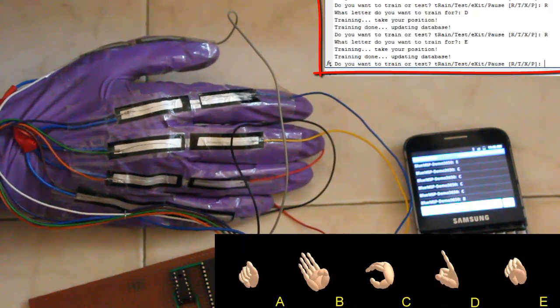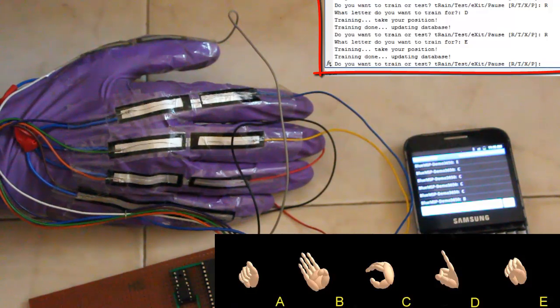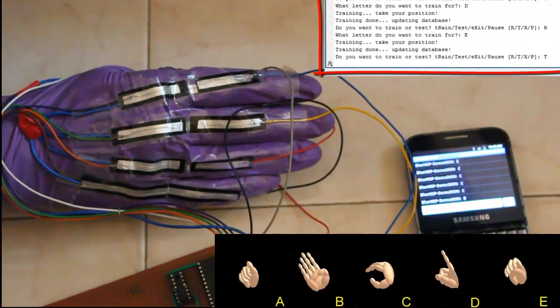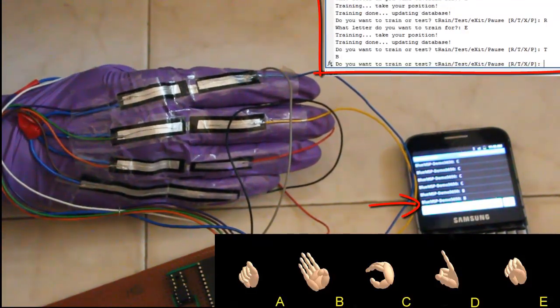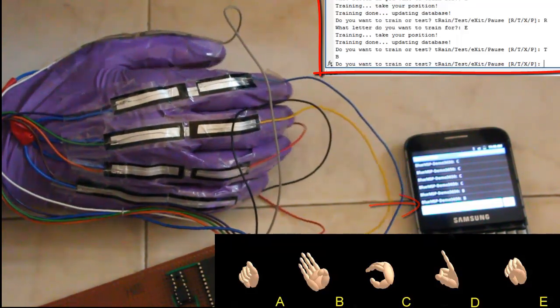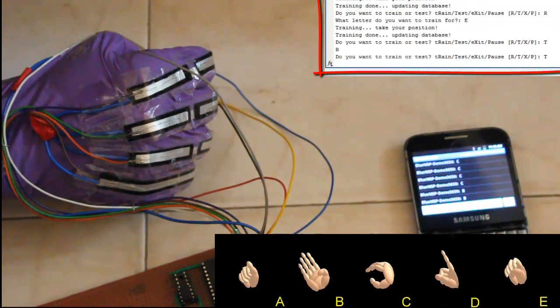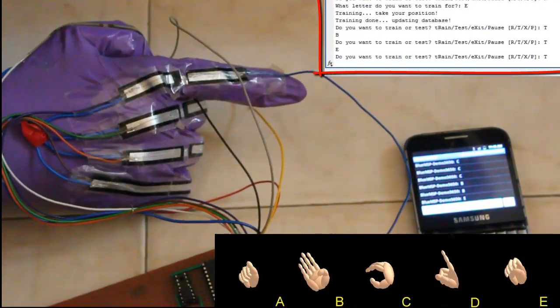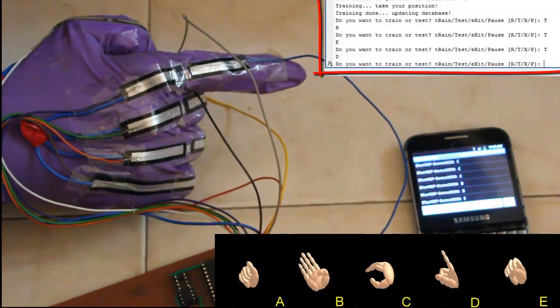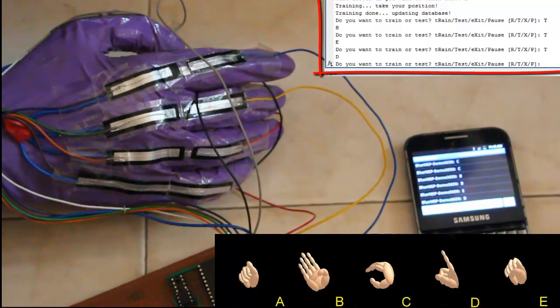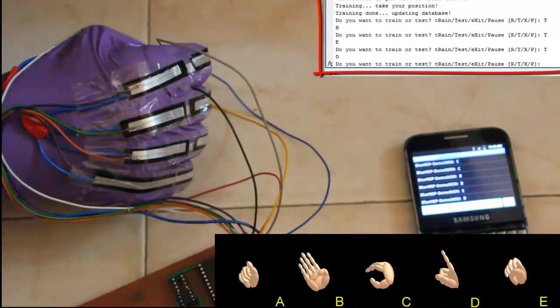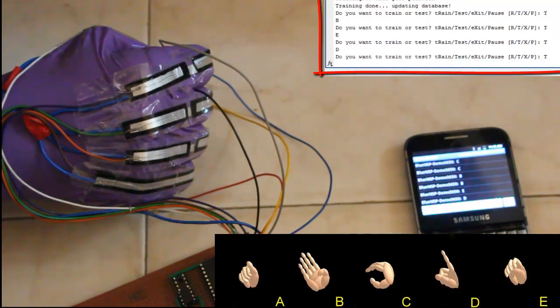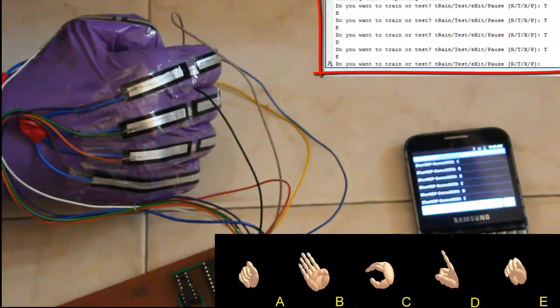Now we shall demonstrate how these letters are reproduced by the computer for interpreting gestures. We shall first make the symbol for B. Now we shall make the gesture for E. Now we shall make the gesture for D. Now we shall again make the gesture for E. Now we shall make the gesture for A.